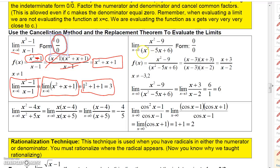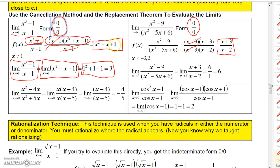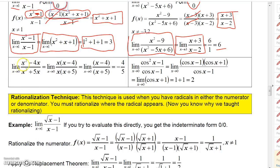Here's another example. Plugging x = 3 into (x²−9)/(x²−5x+6) gives 0 on top and 0 on the bottom — an indeterminate form. Factor the numerator as (x−3)(x+3) and the denominator as (x−3)(x−2). Cancel (x−3) to get the replacement function (x+3)/(x−2). Evaluating at x = 3: (3+3)/(3−2) = 6/1 = 6.